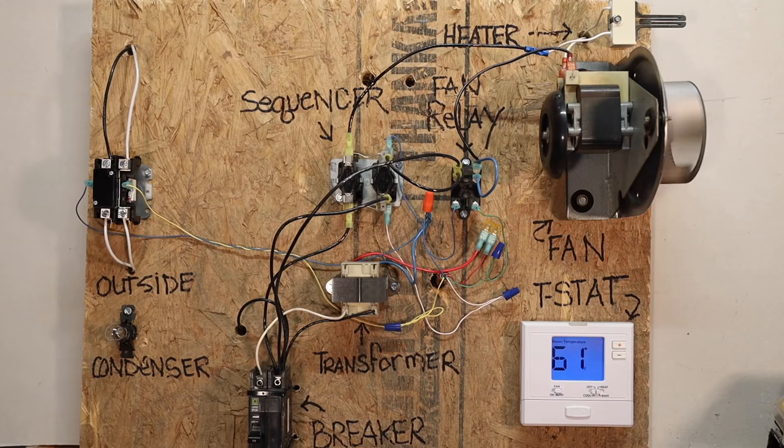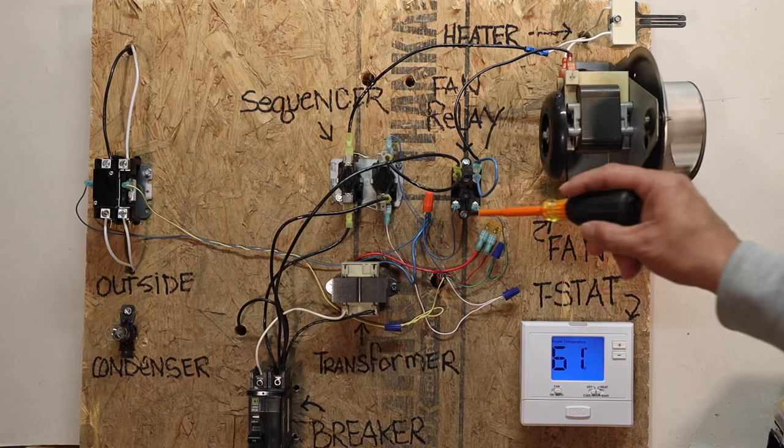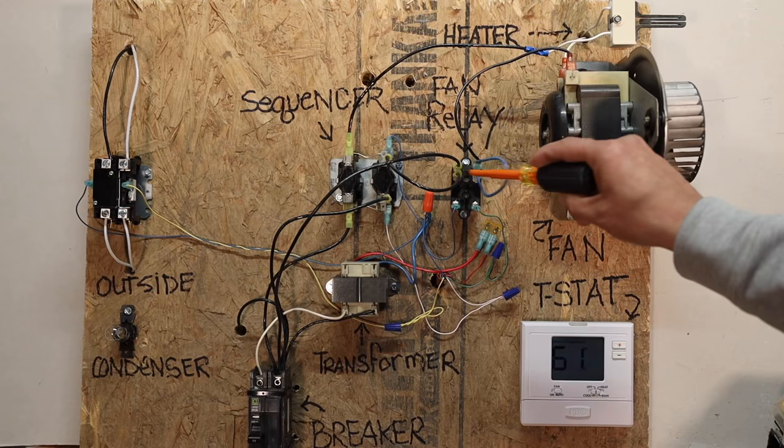When you run the heater, it's a little bit different. So when you run the heater, power is still going through this fan relay, but the bottom, the middle set of spade clips, are what they call normally closed.